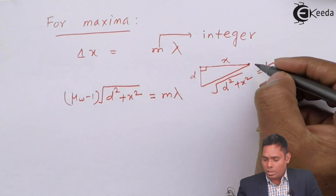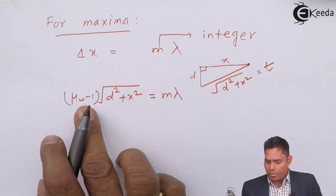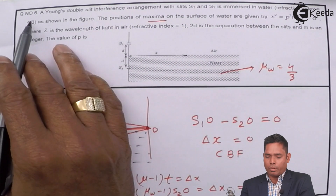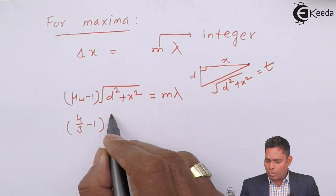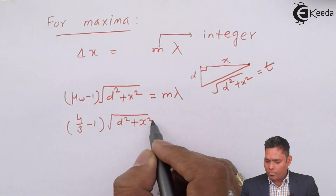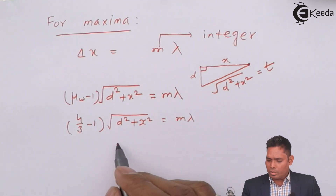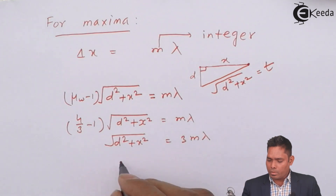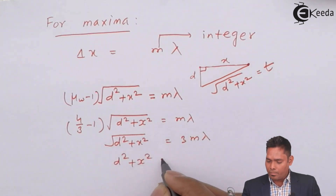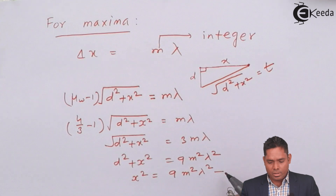Substituting mu_water = 4/3, the expression becomes: (4/3 − 1) × √(d² + x²) = mλ, which gives (1/3) × √(d² + x²) = mλ. Multiplying both sides by 3: √(d² + x²) = 3mλ. Squaring both sides: d² + x² = 9m²λ².